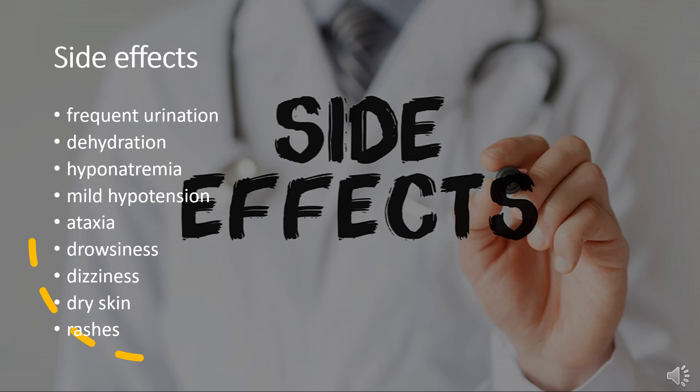One of the most common side effects of spironolactone is frequent urination. Other general side effects include dehydration, hyponatremia (low sodium levels), mild hypotension (low blood pressure), ataxia (muscle incoordination), drowsiness, dizziness, dry skin, and rash.